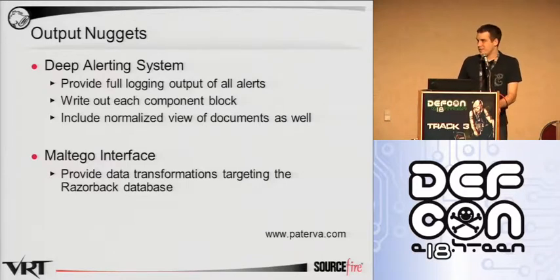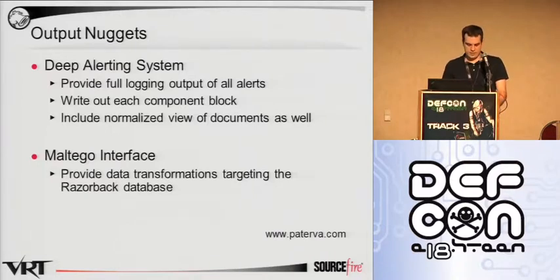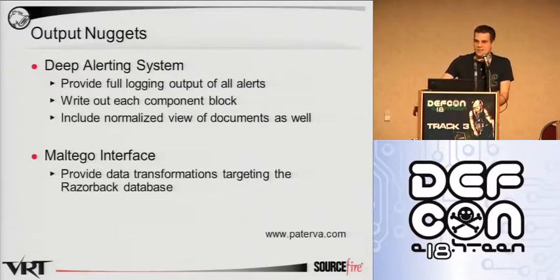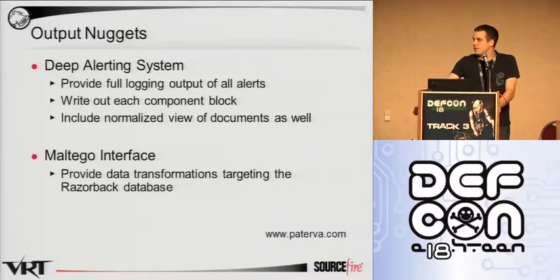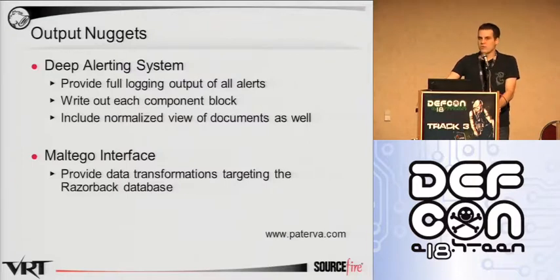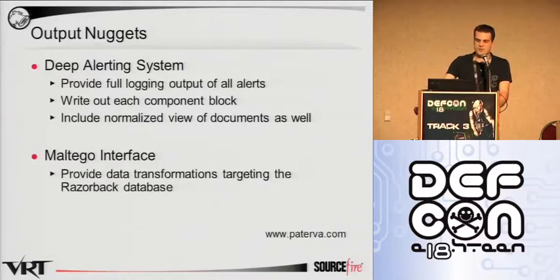The Maltego interface is still in progress. For those not familiar with it, it's self-described as an open source intelligence and forensics application. It data-mines and aggregates information and represents relationships between data in a visual way. We're still toying with it, but the cool thing is that we talked about correlation nuggets earlier, and this would be the prime example of something that could potentially become a correlation nugget.